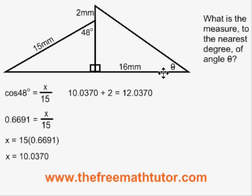From angle theta's point of view, the two sides we know are the opposite and the adjacent. This is a TOA situation, the TOA formula. We plug the values into the formula like this: tangent of unknown angle theta is equal to 12.0370 over 16.